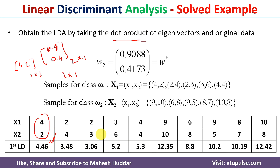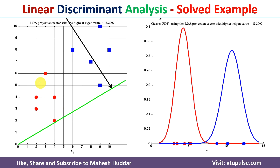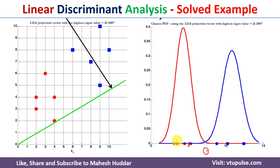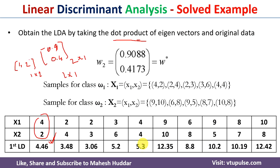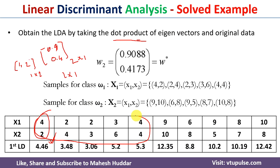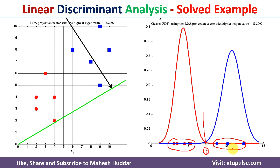Once we have the linear discriminants, we plot them on a new one-dimensional axis labeled y. The values for the first class are approximately 4.46, 3.48, and so on, while the second class values are around 12.35, 8.8, and so on. There is a clear separation between the two classes, showing that linear discriminant analysis successfully separates the data with a straight line boundary.